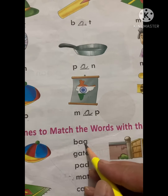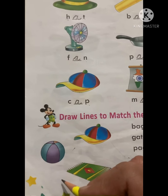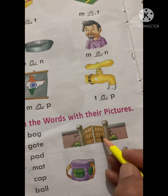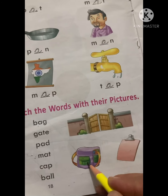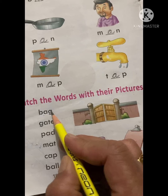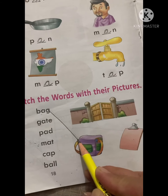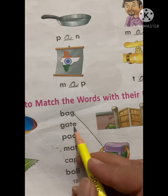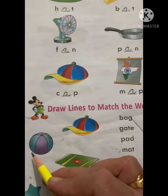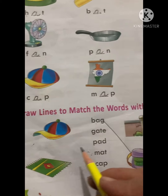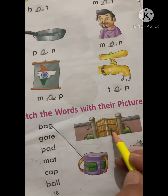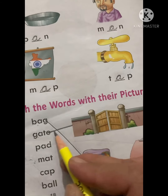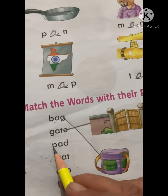Can we find bag on this side? No, it is not there. Is this a bag? No. Is this a bag? No. This one is the bag, so we will match the word 'bag' with the picture of bag. Next is G-A-T-E, gate. Is the gate on this side? No, it is not. Is this a gate? Yes, it is the gate of the house, so we will match 'gate' with the gate picture.